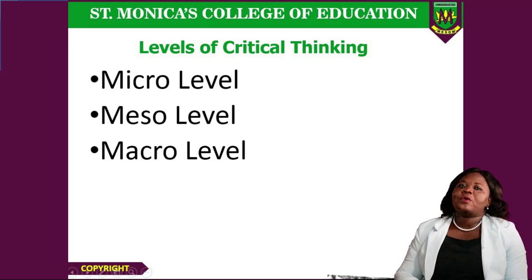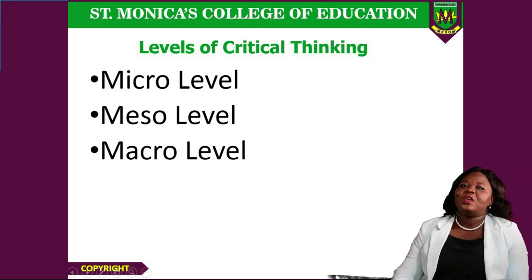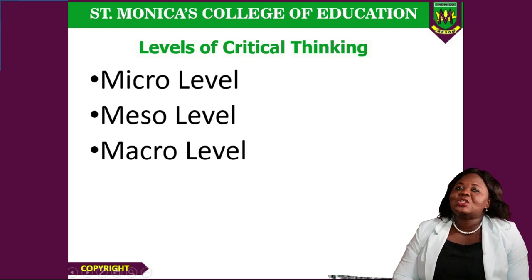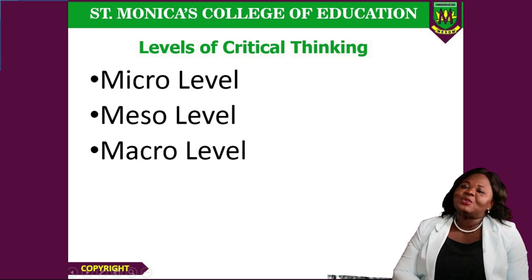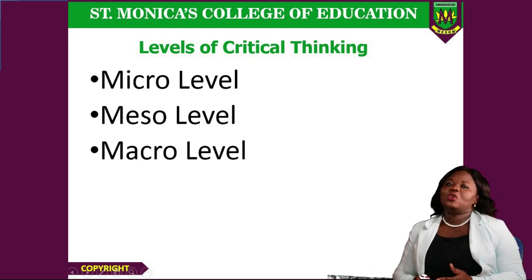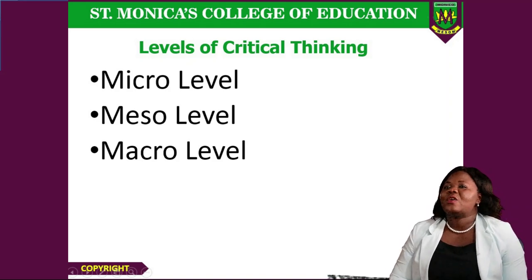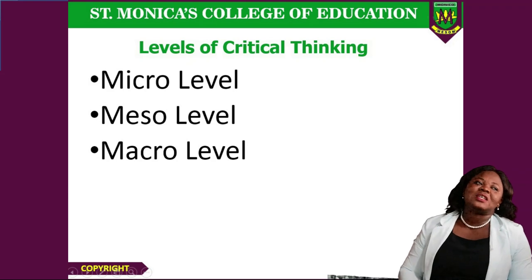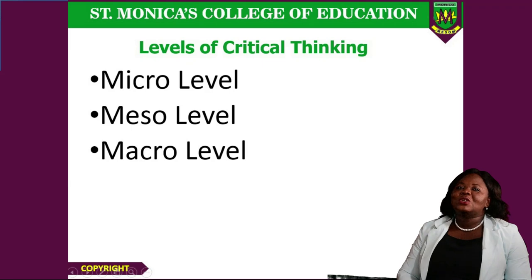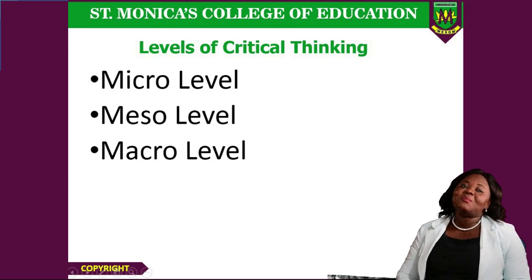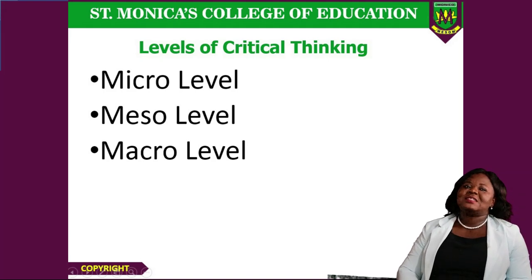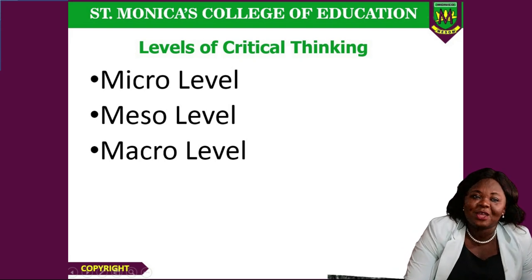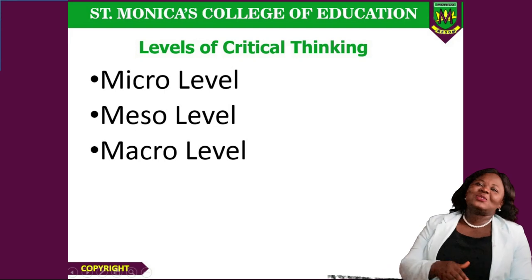There are three major levels in critical thinking. We have the micro level — the fundamental, personal level of critical thinking, dealing with you alone or between you and one person. The meso level is in between, dealing with issues at the intermediate social level: you and your family, your school, your church. And the macro level deals with bigger, national issues — for example, whether there should be a total lockdown during COVID-19.